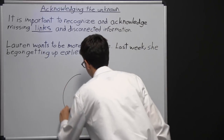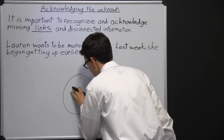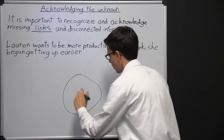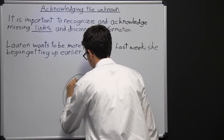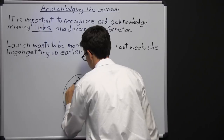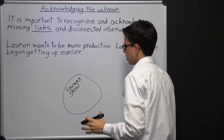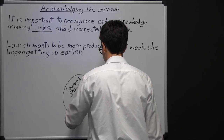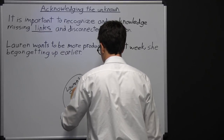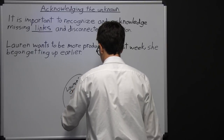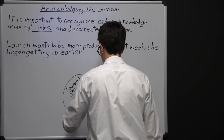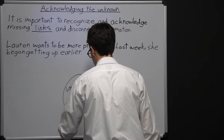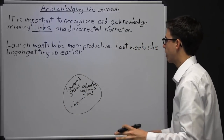I'm going to draw a circle here, and everything inside the circle is what we do know, and everything outside the circle is what we don't know. What do we know? We know Lauren's goal — Lauren's goal is to be more productive. We know that she adjusted her wake-up time, and we know when she did it — she adjusted her wake-up time last week. That's all we know.